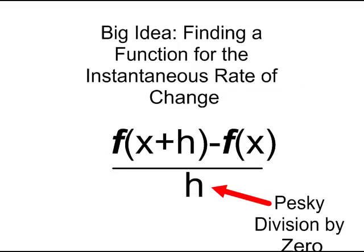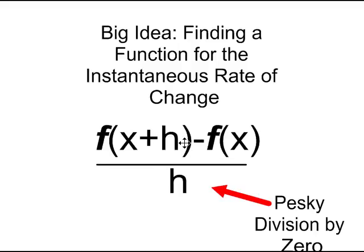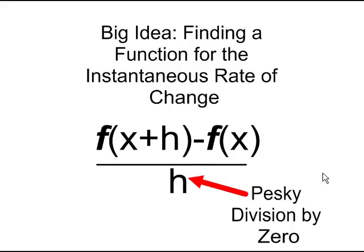We're still working on our instantaneous rate of change function, or our slope function, for any curve, and we're dealing with this formula here. And what we're trying to deal with right now is this whole pesky division by zero problem. As that h gets smaller and smaller, when it reaches zero, our function blows up.